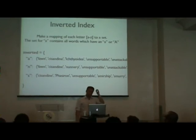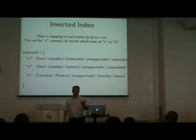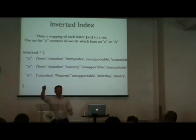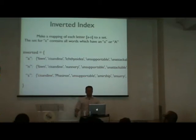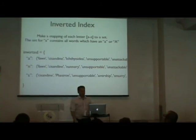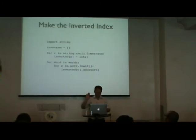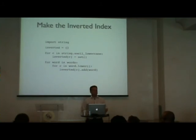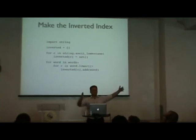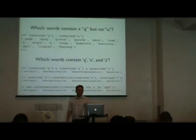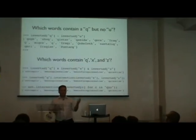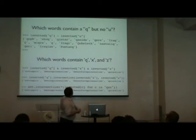With this inverted index built in about six or seven lines of code, I can ask questions like: how many words have a Q and no U? There's a handful — Iraqi and Qatari I understand, but most of the others I don't know. Or: words with Q, X, and Z — there are a few, including some chemical compounds. Strange words.